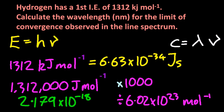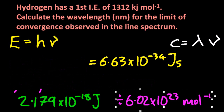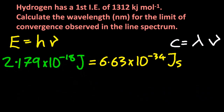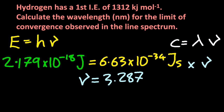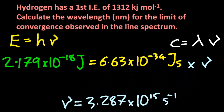Now our energy is in joules and will fit with Planck's constant. Rearranging E equals h-nu to solve for nu gives us the frequency, which is in per seconds — or hertz.